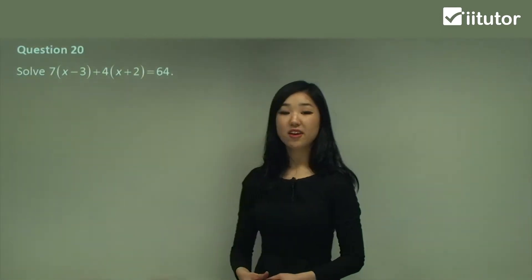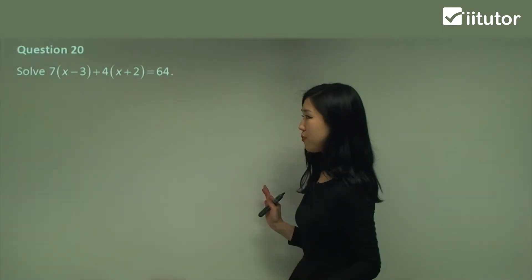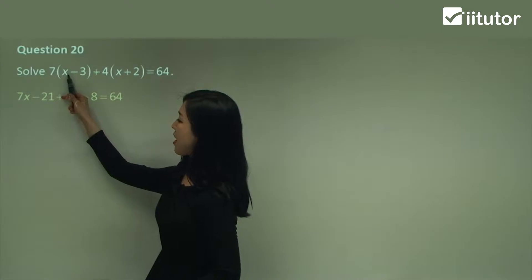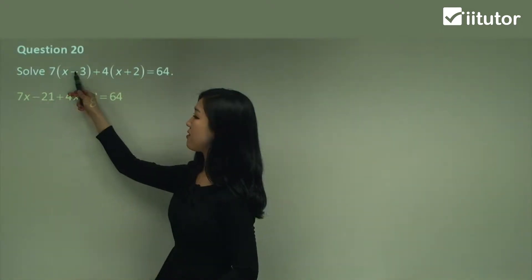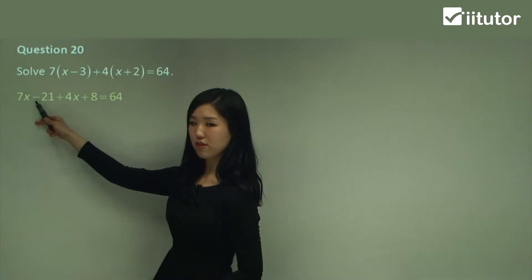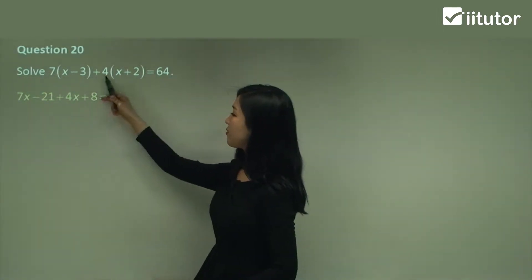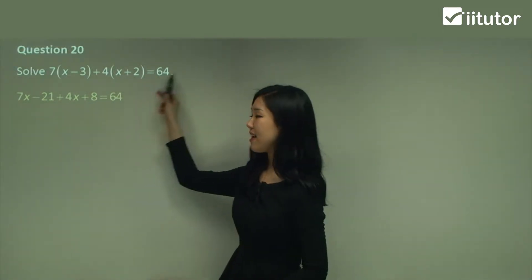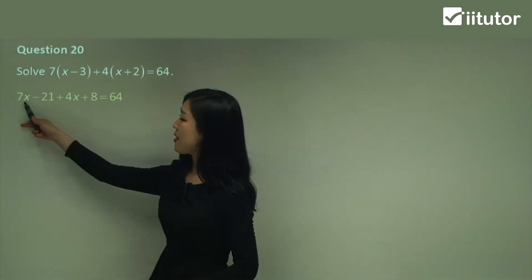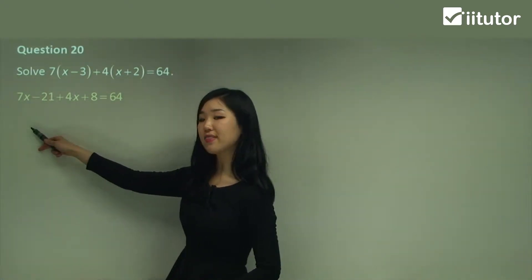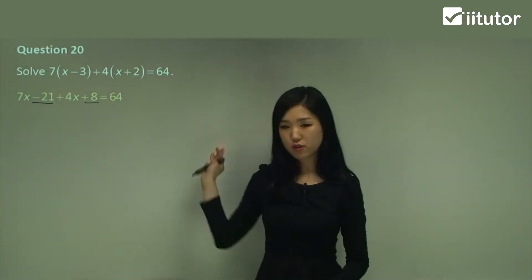Question 20. What are you gonna do guys? Expand it out. Get rid of those grouping symbols. So I did 7 times x which is 7x. 7 times 3 which is 21 but we have a negative so make sure you follow the sign. Negative. Now 4 times x is 4x. 4 times 2 is 8 and it's all equal to 64. Gather your like terms. I'm gonna keep my 7x and 4x on my left but the negative 21 and the 8 I'm gonna move it to the other side.